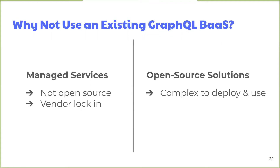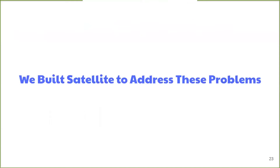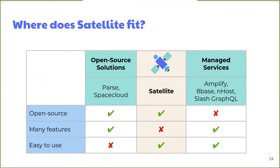The existing GraphQL back-end as a service options have many useful features, but also have their own trade-offs. With managed services, you don't have to deploy them yourself and they're easy to use, but they're not fully open source. With open source solutions, you retain control of your data, but you have more complicated deployment and setup — you might need to select and configure your own database. They can also take time to learn after you set them up. We saw an opportunity for an easy-to-use, self-hosted, open source GraphQL back-end as a service.